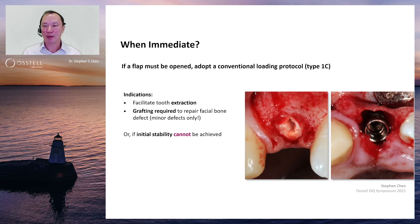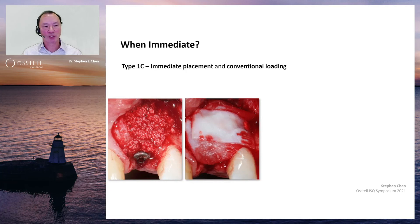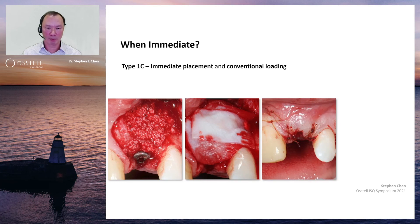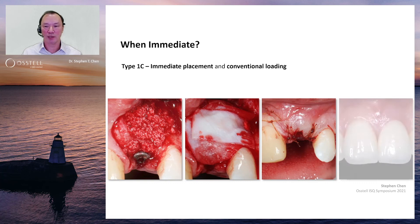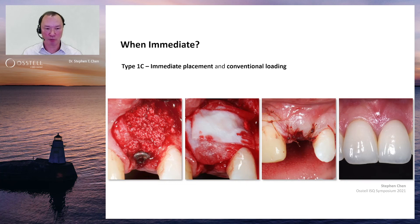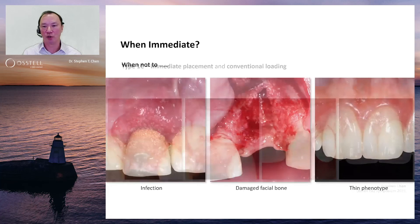The conventional loading protocol — also referred to as Type 1C — allows the implant to integrate without occlusal forces or stresses that might disturb integration when high initial stability has not been achieved. In a case example, the flap is opened, the tooth extracted, the implant placed immediately with GBR procedures to reconstruct the facial bone, the implant fully submerged, and subsequently uncovering and restorative procedures follow, resulting in a very good aesthetic and functional outcome.